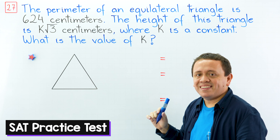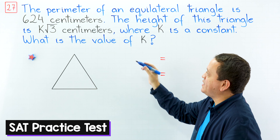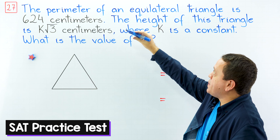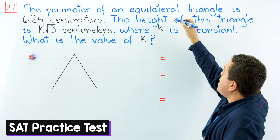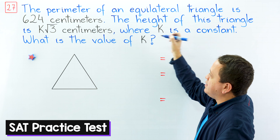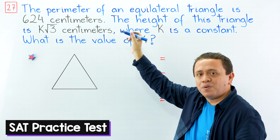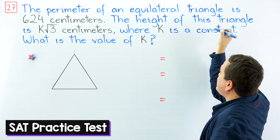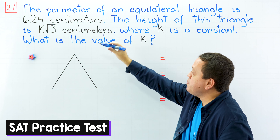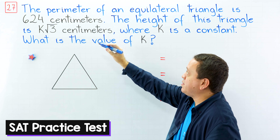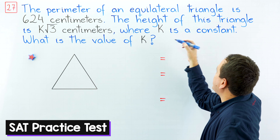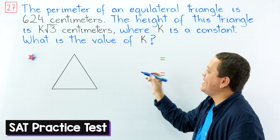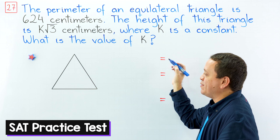Hi, let's continue with our SAT practice test. The perimeter of an equilateral triangle is 624 centimeters. The height of this triangle is K times the square root of 3 centimeters, where K is a constant. What is the value of K?